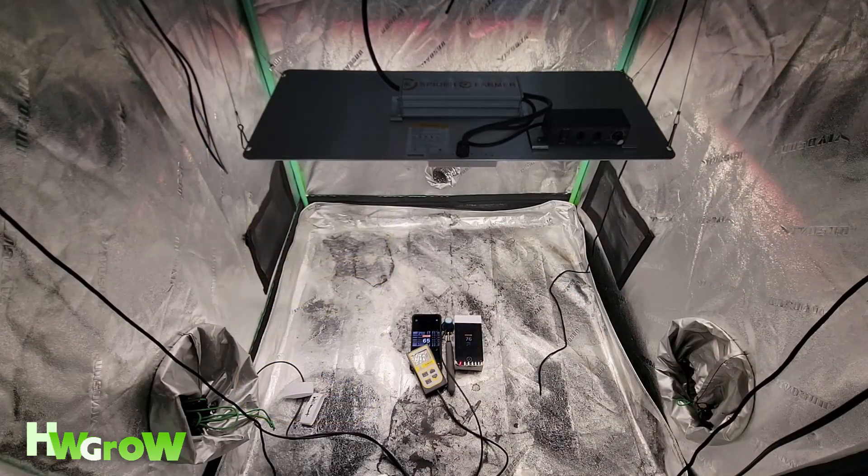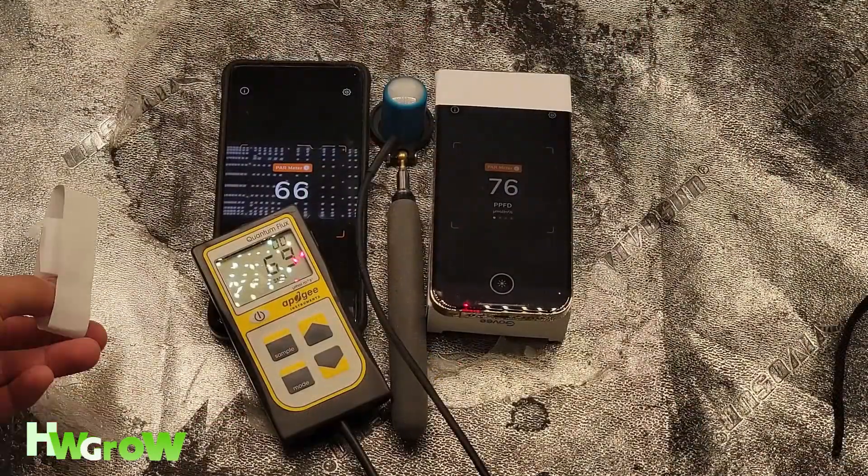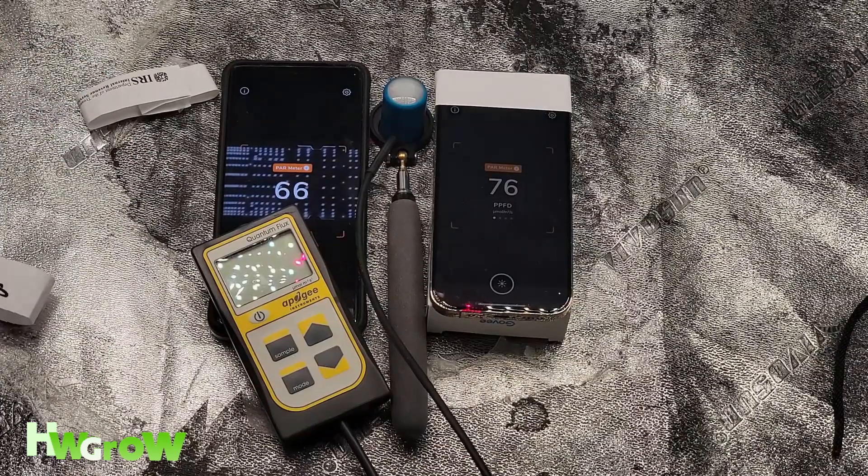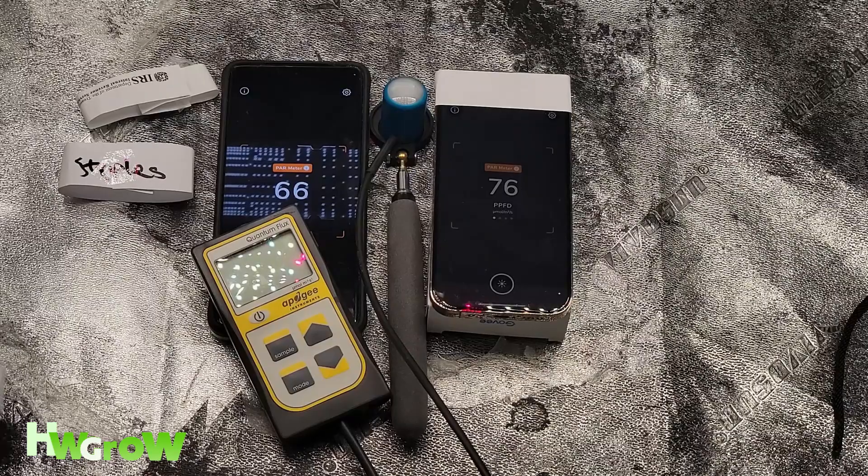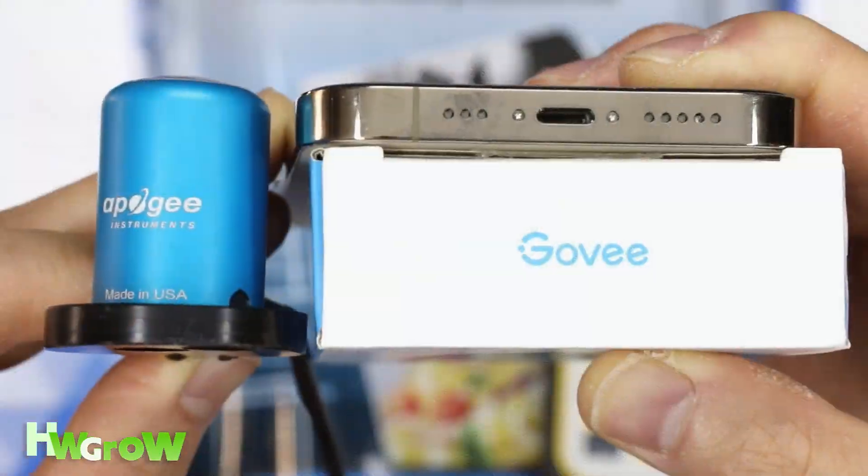All these devices had the app updated as of recording, and no calibrations were made on any of them. To make sure the readings were taken from the same distance from the light, I have this Gov box that elevates the phone's camera to the same height as the probe on the Apogee.